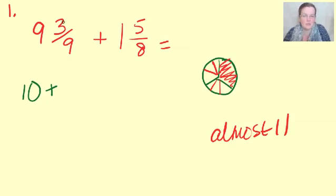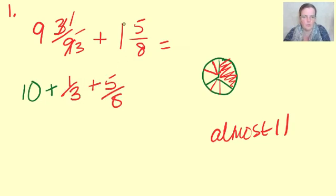So, three ninths is a third. That's plus a third. What we did maths-wise, we said three goes into that once, three goes into that three times and there's our third. So, it's plus a third plus five eighths because we've already added this one and this nine.